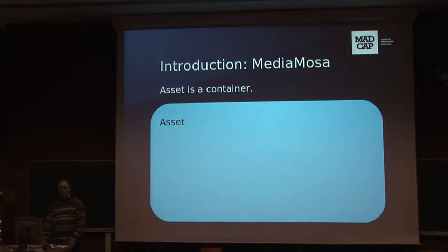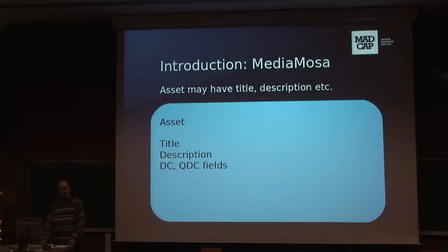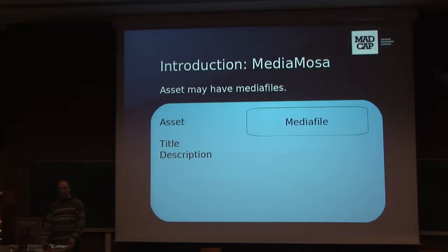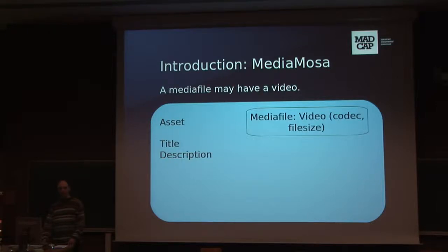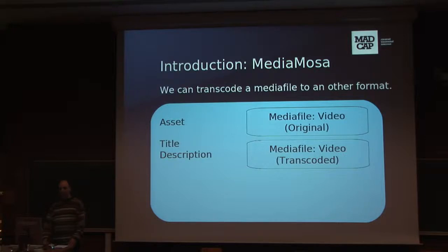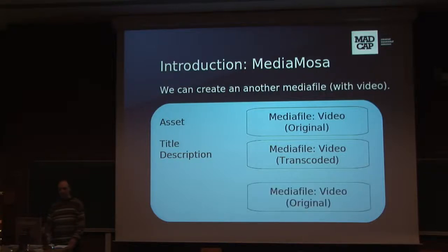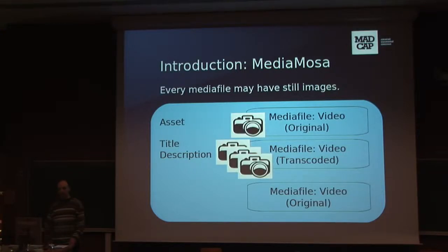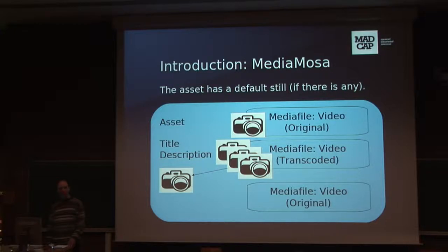A short introduction about MediaMosa and its main elements. MediaMosa stores assets. An asset is a container where you can store title, description, and other fields. An asset may have one or more media files, and the media file may have a video. A video has a codec, file size, and duration — you can store this data in the media file. You can transcode the media file to another format, giving you an original and a transcoded version. You can also upload another media file, so you could have two originals and one transcoded. You can easily create one or more still images from the videos and set one of them as the default.